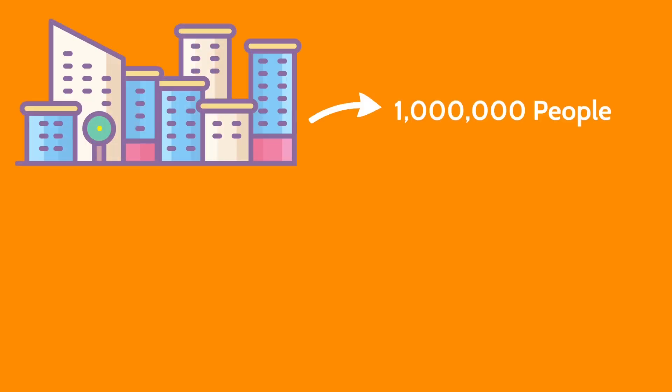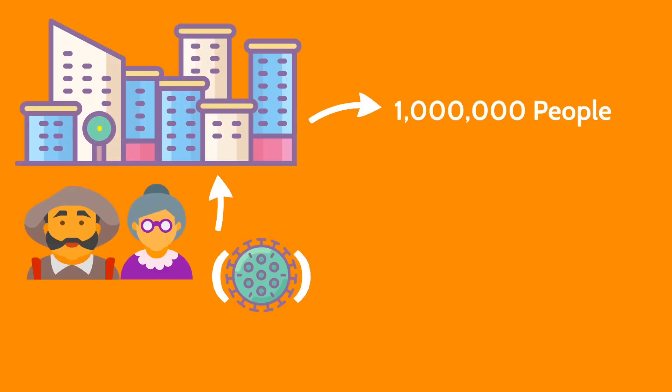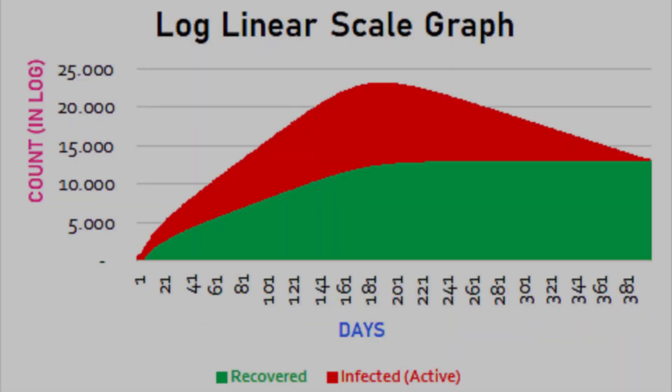Now let's crunch numbers. Let's say we have a city with a population of 1 million and 2 tourists who had COVID-19 visited the town. Let's assume the infection rate of COVID-19 to be 0.24 and the recovery rate to be 0.16. If we apply these to our equations, we get our first SIR model and this is its graph.